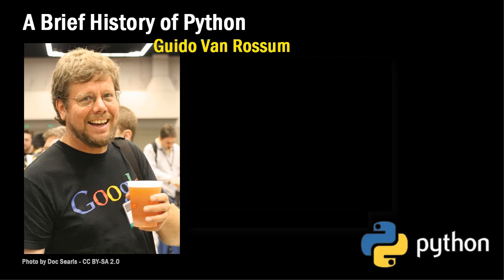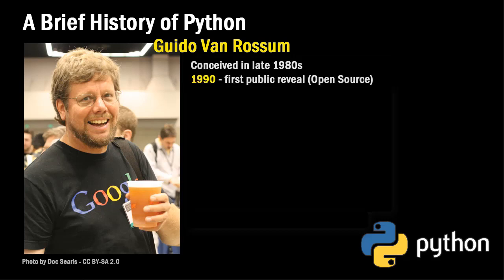Python was developed by Guido van Rossum. He was a Dutch programmer who was born in 1956 and is still alive. He conceived the language in the 1980s but didn't really release it publicly until 1990, and revealed it as open source. Open source simply means that others can add to it, build upon it, and redistribute it.